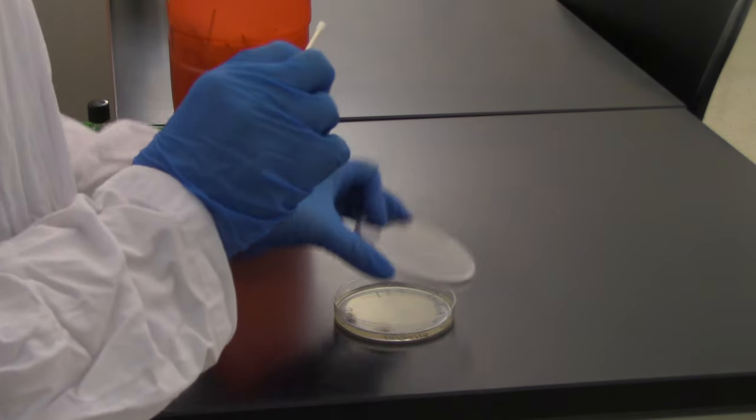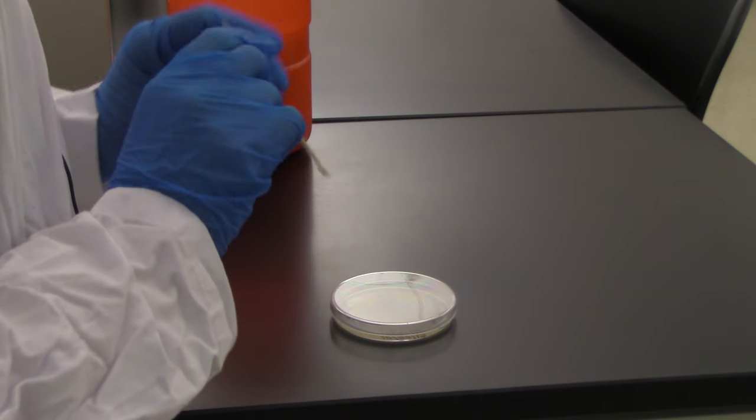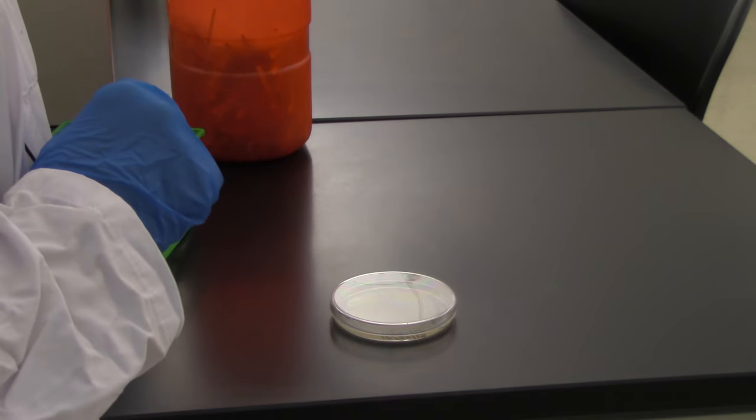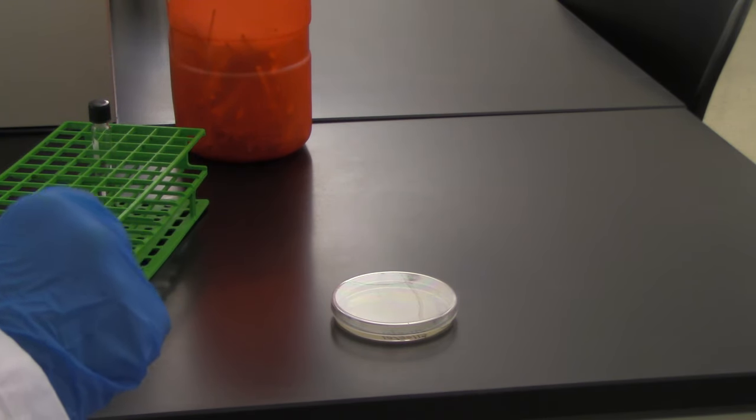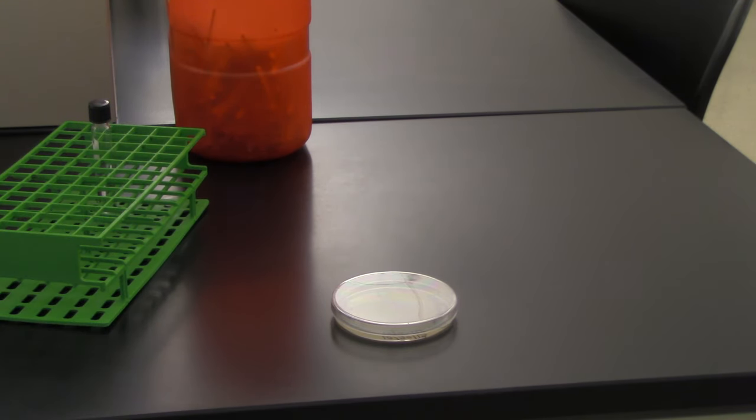When I'm finished, I'm going to put the lid back onto my petri plate and dispose of the swab into my sharps container. Don't forget to take this wrapper and throw it away in the regular garbage. And that is how you do an environmental sample.